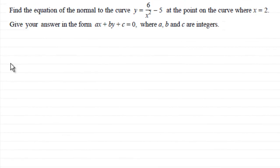Hi, now in this question we're asked to find the equation of the normal to the curve y equals 6 divided by x squared minus 5 at the point on the curve where x equals 2. And we've got to give our answer in the form ax plus by plus c equals 0 where a, b, and c are integers.